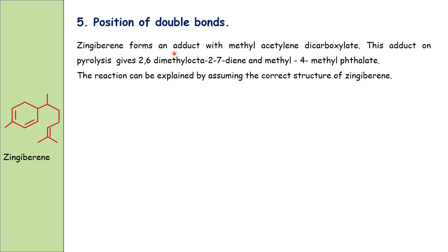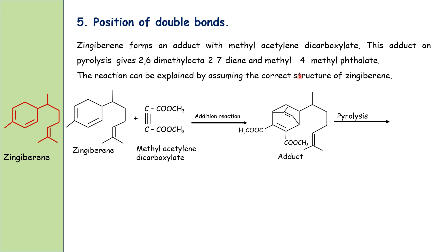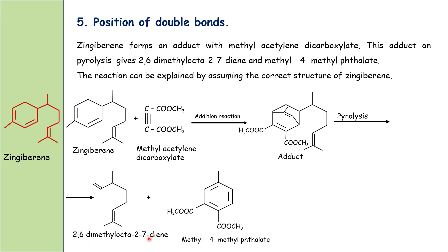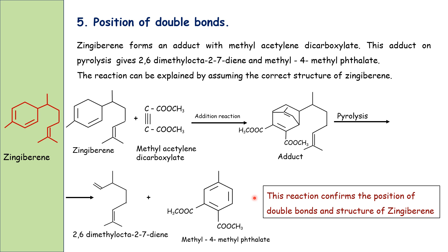Position of double bonds: gingivirine forms an adduct with methyl acetylene dicarboxylate. Upon pyrolysis, this adduct gives 2,6-dimethylocta-2,7-diene and methyl 4-methylphthalate. This Diels-Alder type reaction and its pyrolysis products confirm the position of the double bonds in the gingivirine structure.